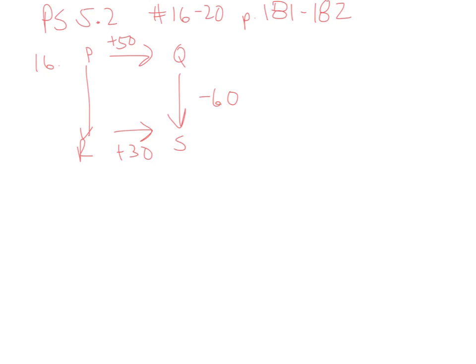Number 16 is a visual representation of a set of reactions that you can use Hess's law to find the unknown value. This set of equations shows that going from P to Q is an endothermic reaction which absorbs 50 kilojoules of energy.